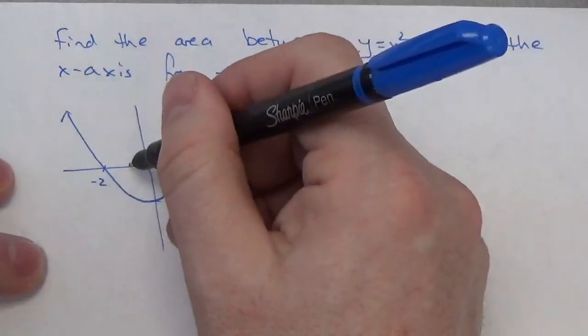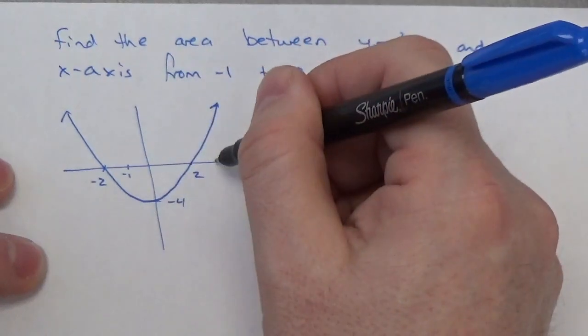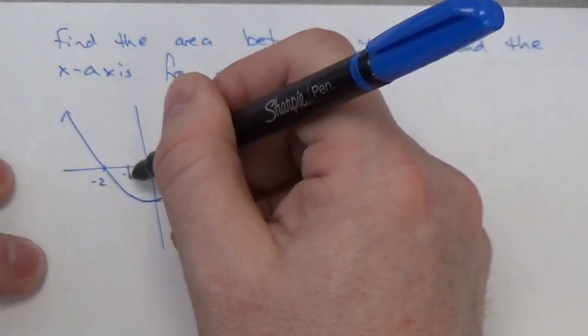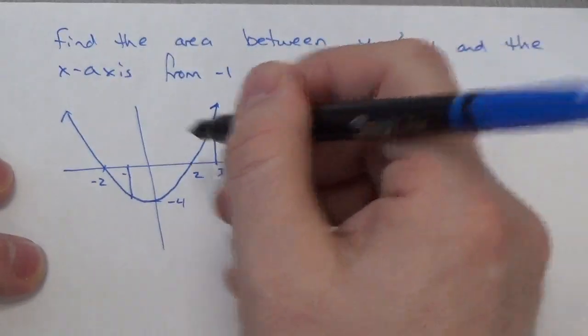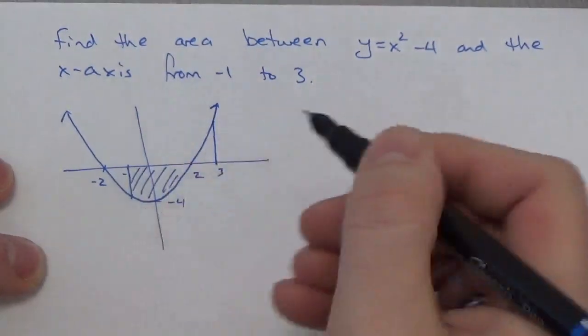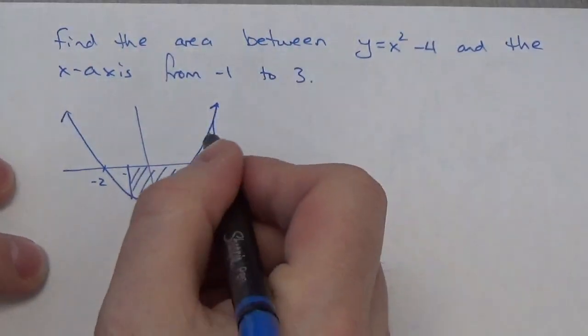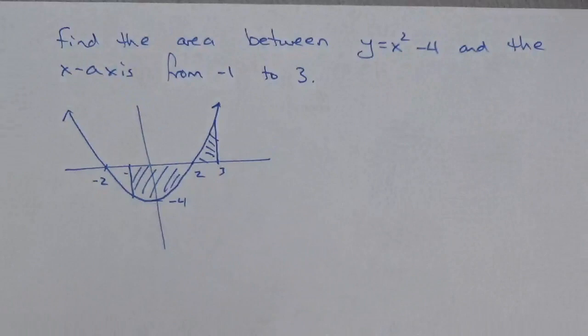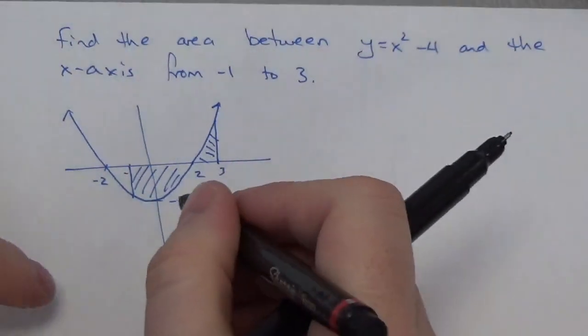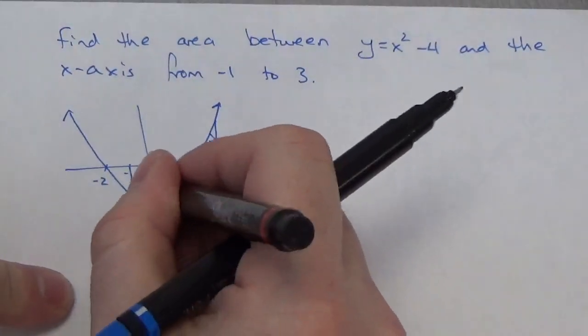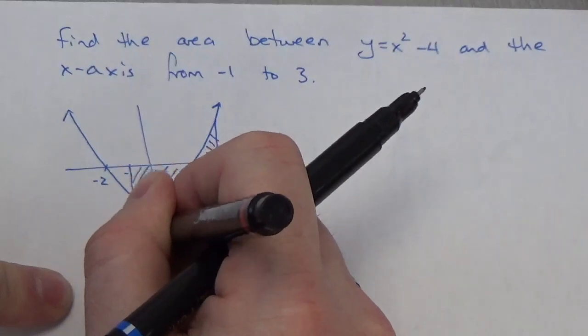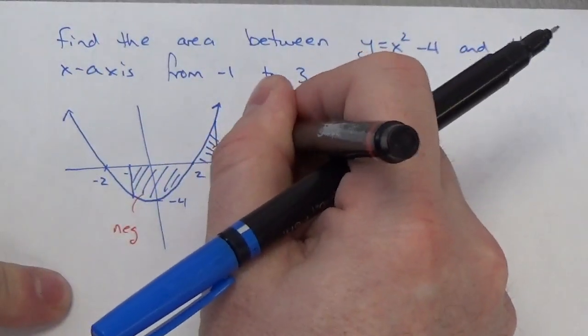Now, I am looking for the area from negative 1 out to 3, so that's going to be that area plus that area. Now, I already know, because of the way this is set up here, that this is going to be a negative and this is going to be a positive.